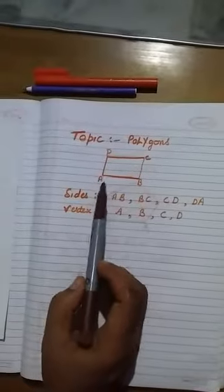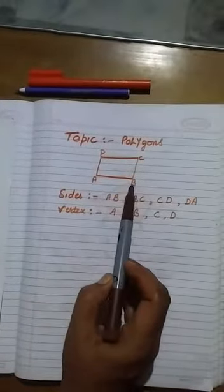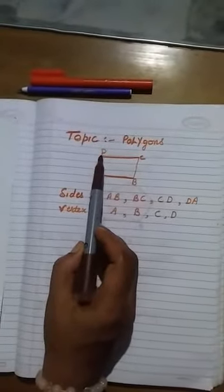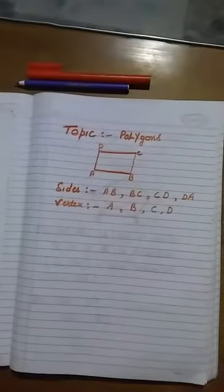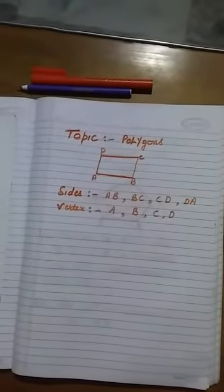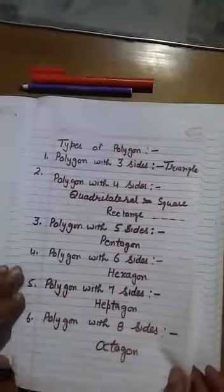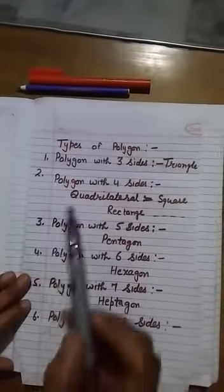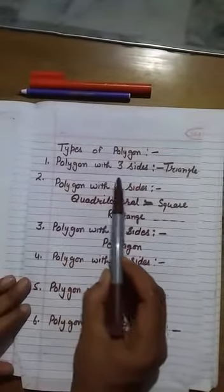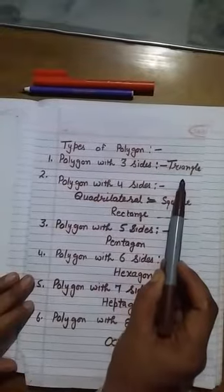So, here vertex of this polygon is A, B, C and D. Now, types of polygons. Polygon with three sides is called triangle.